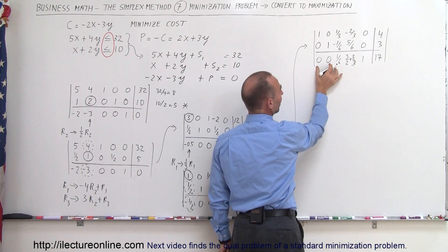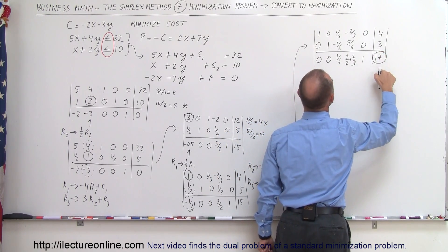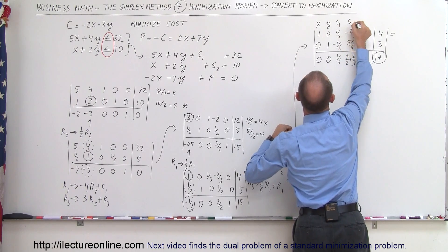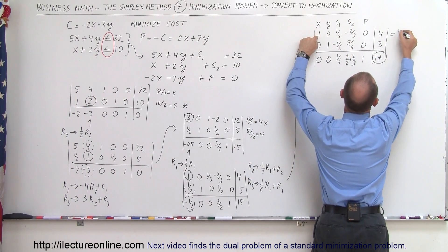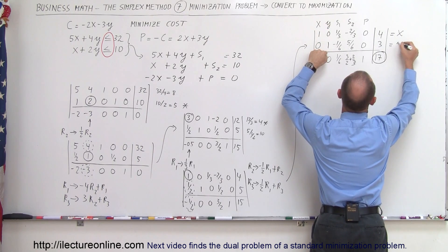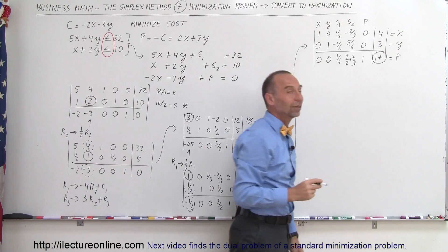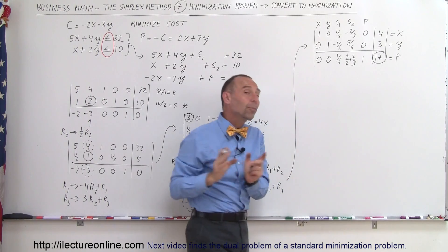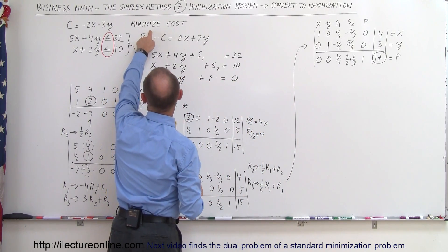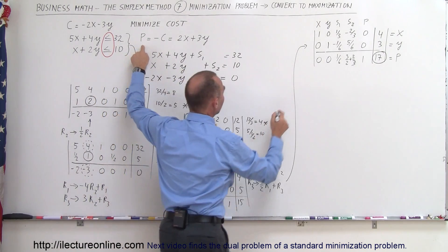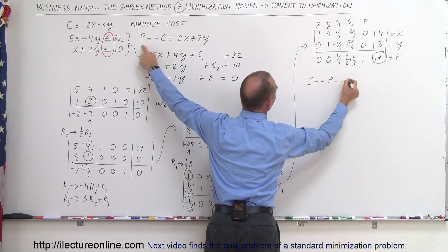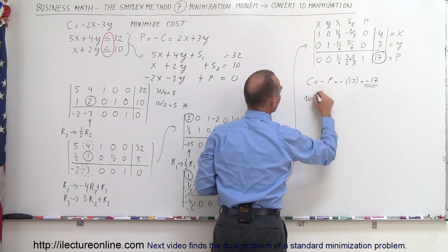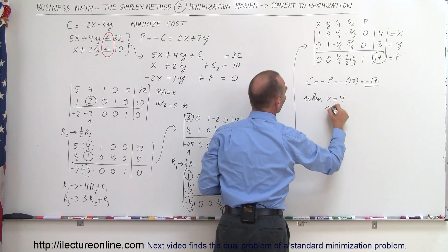Now we're done because we have zeros in the bottom row where x and y are. The answer for profit is 17. Reading the solution: x equals 4, y equals 3, and the profit is 17. But we're not looking for the profit — we're looking for the minimum cost. Since cost equals the negative of profit, the cost equals negative 17 when x equals 4 and y equals 3.